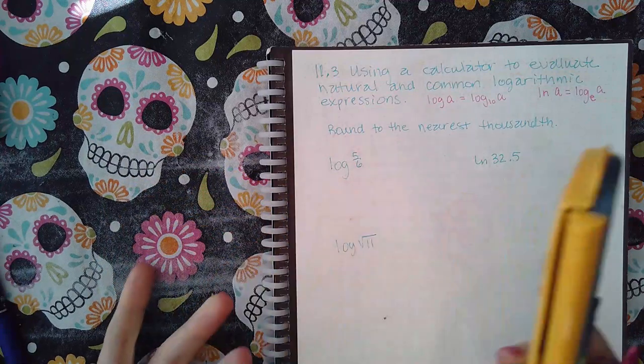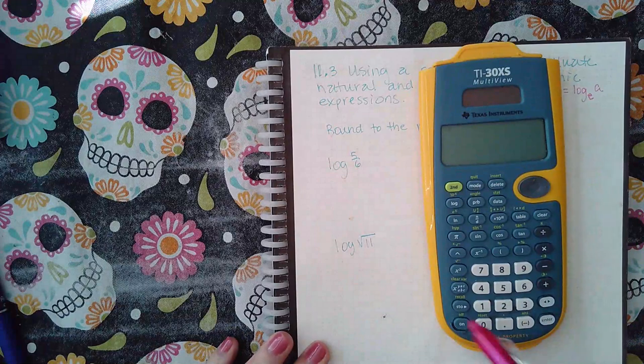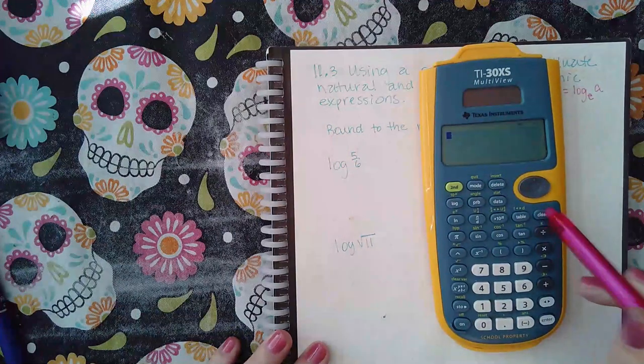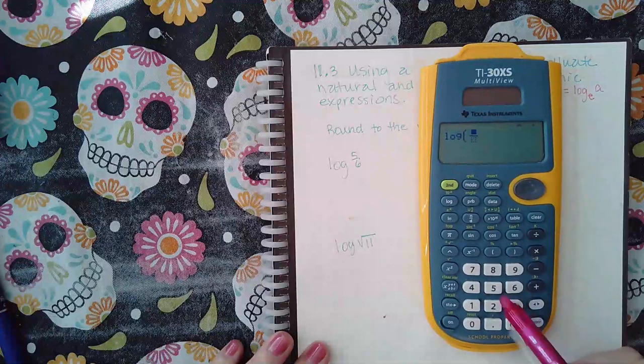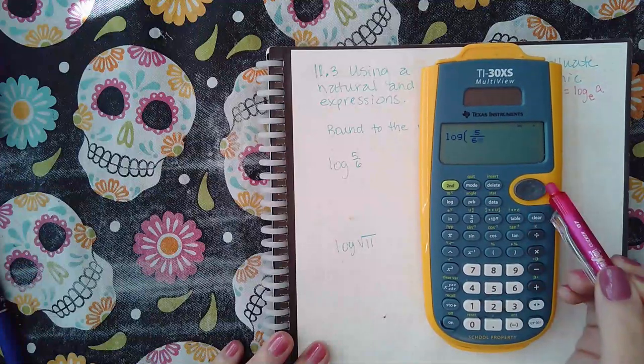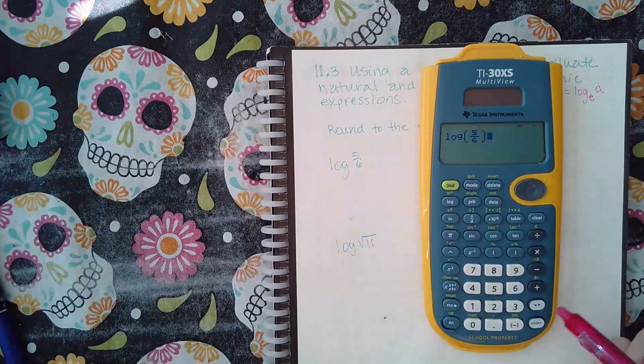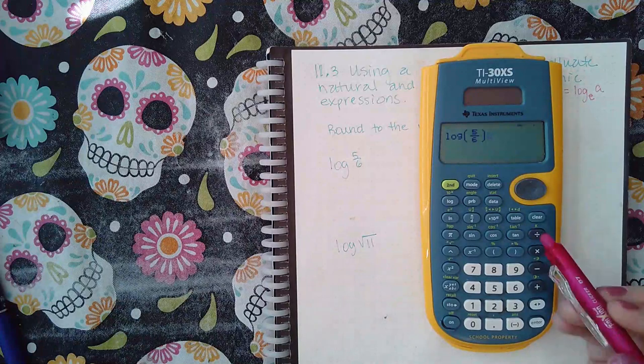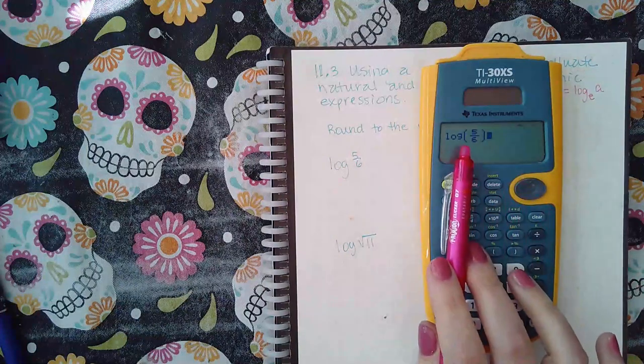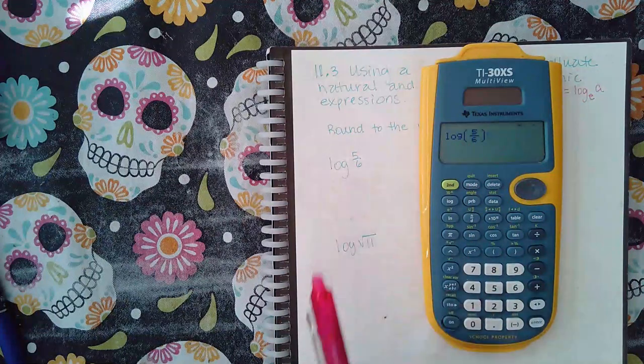In order to type this in my calculator, I'm going to hit my log button and then type in five over six. And again, if you have not obtained this calculator by now, it is still not too late. It definitely helps to use this calculator because the way it looks on the screen should be exactly the way it looks on paper, and vice versa.